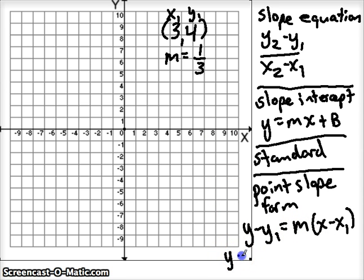So we don't need y, but we do have y1, and that's 4. And we know our slope is 1/3. That x we don't need, but we've got this x1 right here, and that's 3.